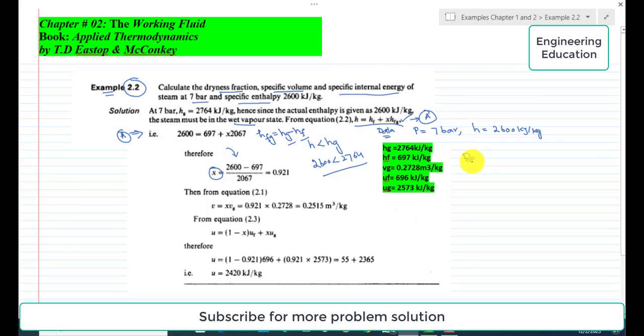Simplifying this, we get the value of dryness fraction. In this example we are required to find three things: dryness fraction, specific volume, and specific internal energy. The dryness fraction, if we simplify this, we get x = 0.921. This is the required value of dryness fraction.